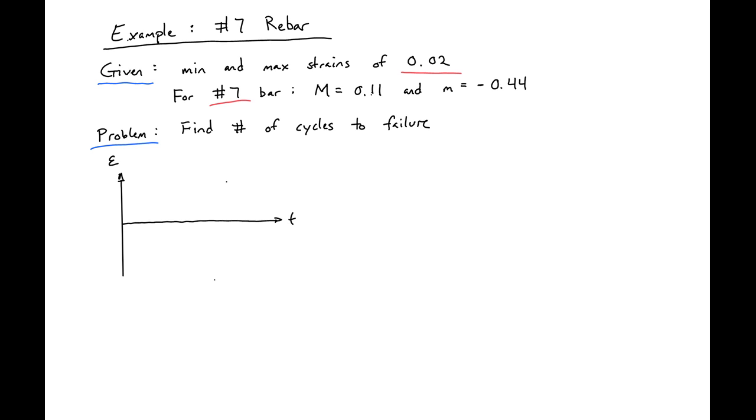If we go to our strain versus time plot, we'll see that we'll cycle back and forth between 0.02 and negative 0.02 until failure. We'll keep cycling back and forth to failure.